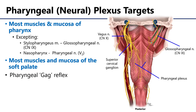The stylopharyngeus muscle is efferently innervated by cranial nerve 9 — that's a major exception to pharyngeal innervation. The glossopharyngeal nerve has a very classic anatomical relationship with stylopharyngeus: it exits the jugular foramen, comes down in close relationship with stylopharyngeus, and dives between the superior and middle pharyngeal constrictor muscles. Another major exception is that the nasopharynx mucosa is not innervated by the pharyngeal plexus but rather by a pharyngeal nerve, a branch of V2, the maxillary division of the trigeminal nerve.